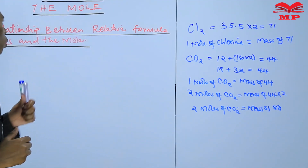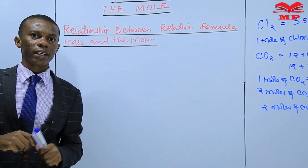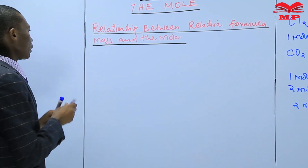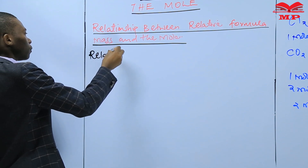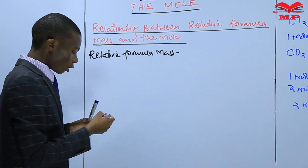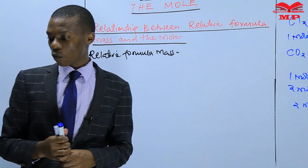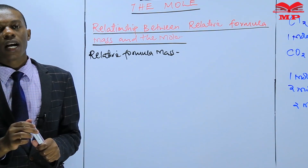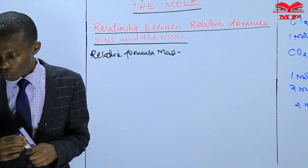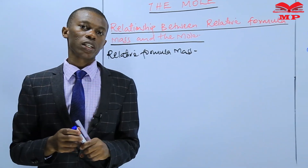Therefore, in this lesson, I want us to concentrate on the relative formula mass and the mole. I will start by defining what the relative formula mass is. We said that the relative formula mass is the sum of the relative atomic masses of all the atoms in a formula unit of a compound — the sum of all the relative atomic masses of all the atoms in a formula unit of a compound.